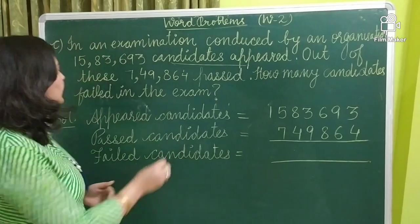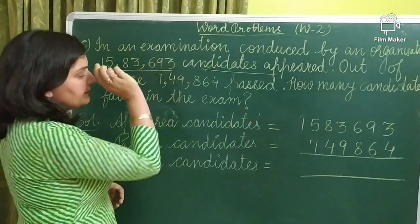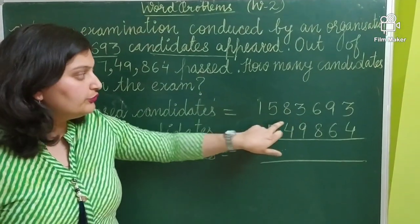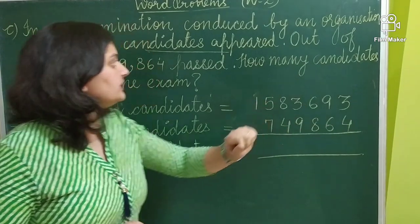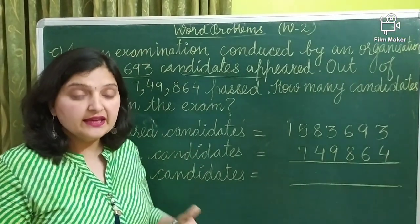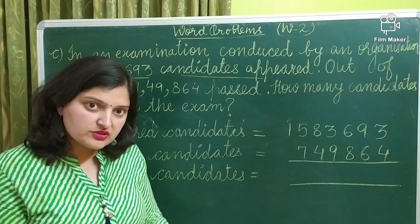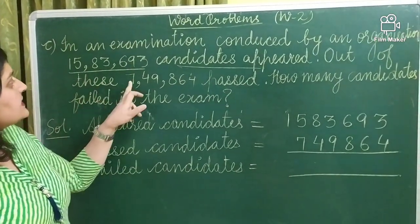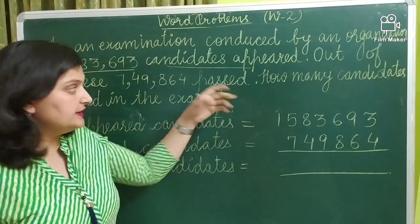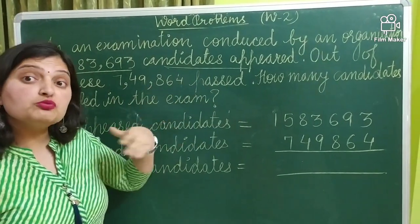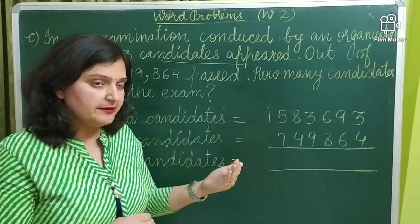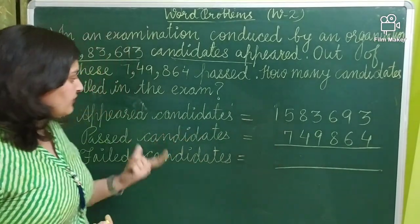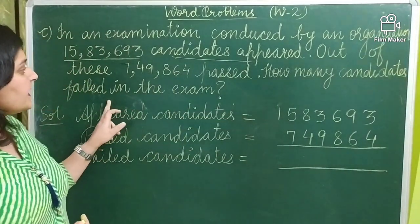So we can say that the appeared candidates are equal to 15,83,693. After that, out of these candidates, 7,49,864 passed, and the rest of them failed. So it means we will subtract to find out how many candidates failed.